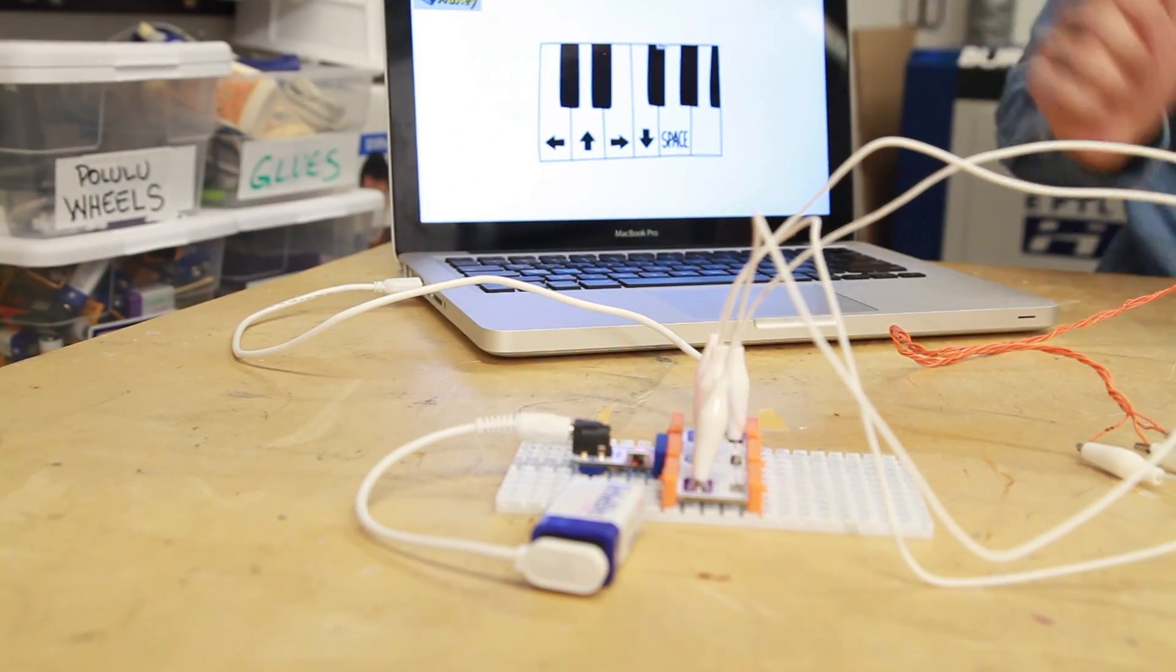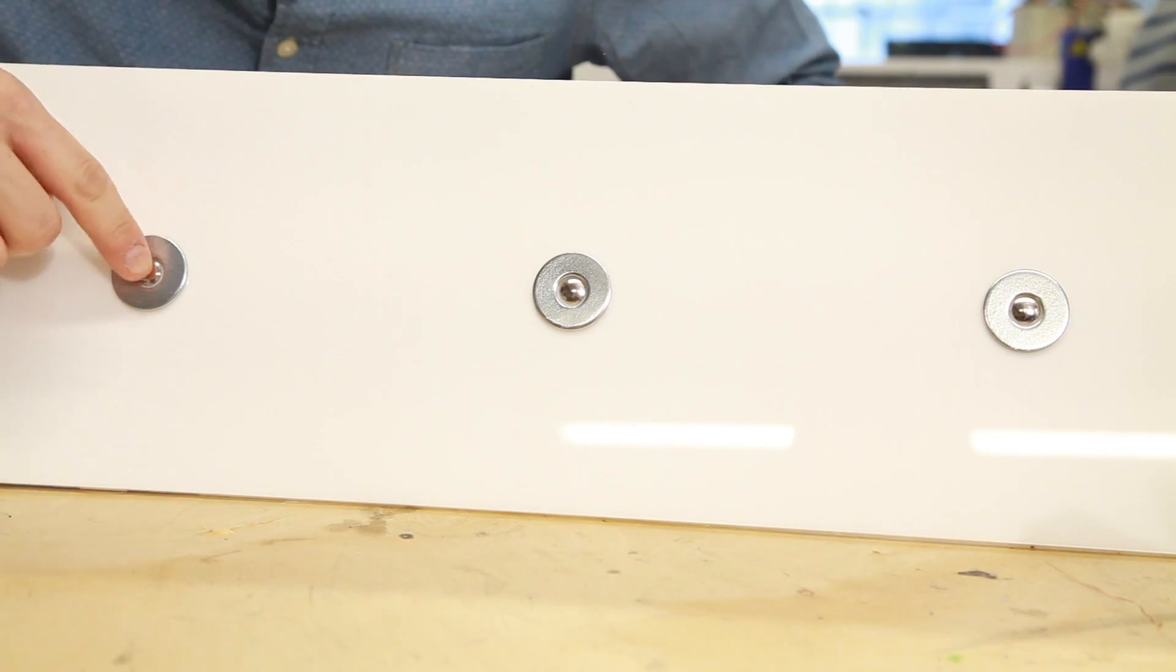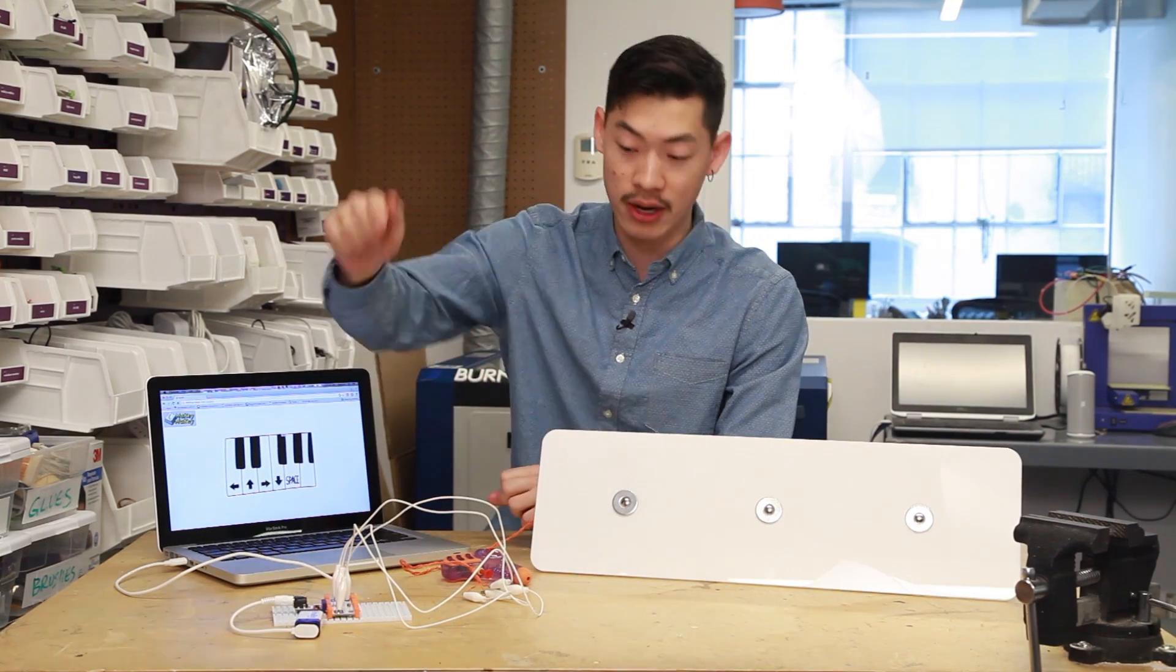The Makey Makey module is connected to the computer via the micro USB cable, while the ports on the module are connected to each of these metal targets on the board. The center of the targets, which are simple metal thumbtacks, are each connected to each other and wired to the Earth port on the Makey Makey module.